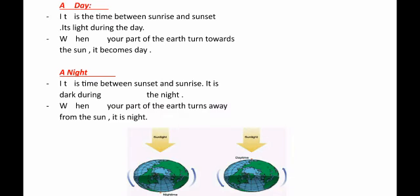How does the rotation of Earth around itself produce day and night? We will know from the definition of day and night. A day is the time between sunrise and sunset — it is light during the day. When you stand on part of the Earth that is towards the Sun, you can see the sunlight. This part of Earth will be in the daytime.